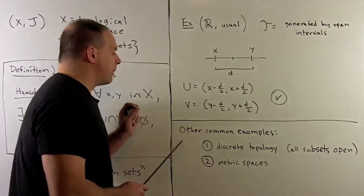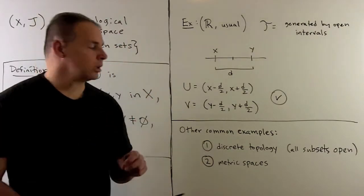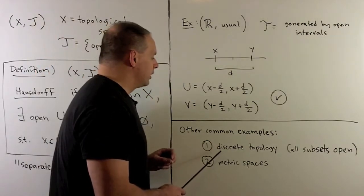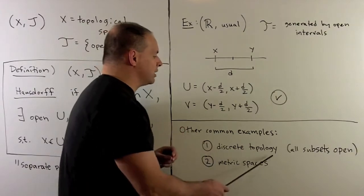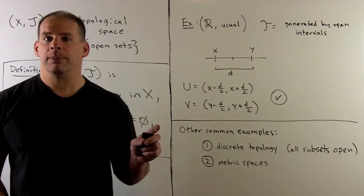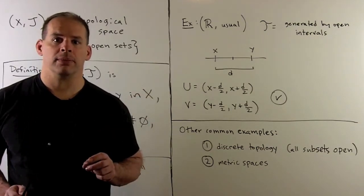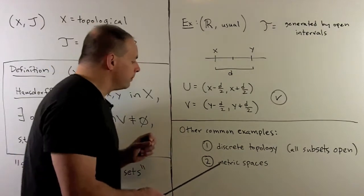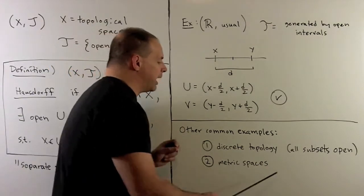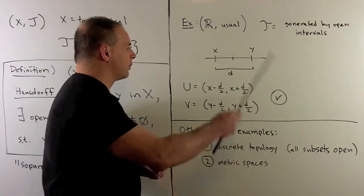Other common examples of Hausdorff spaces: if we take any space with a discrete topology, so in that case every subset is open, then the points themselves will be the open sets. We also have any metric space is a Hausdorff space essentially by the same argument we gave for the real line.